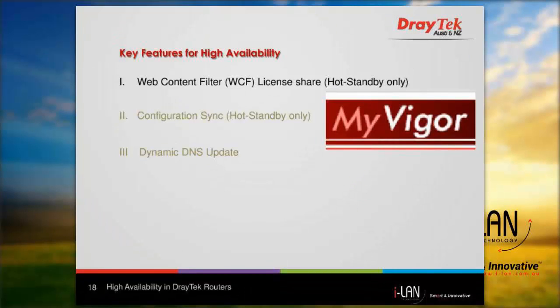We will look at some key features of high availability. A network administrator can create a high availability group of up to eight routers, and they will share the same web content filter. Only one router at a time — the primary — will use the license. When the primary router goes down, the secondary router will take over the web content filter to provide continuous firewall protection for LAN clients.